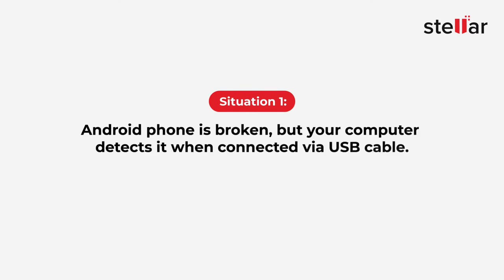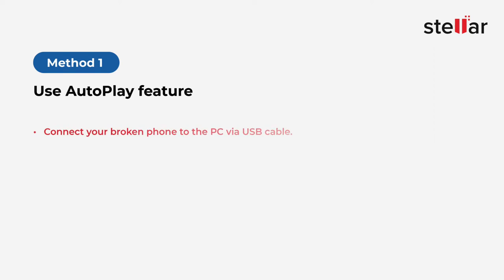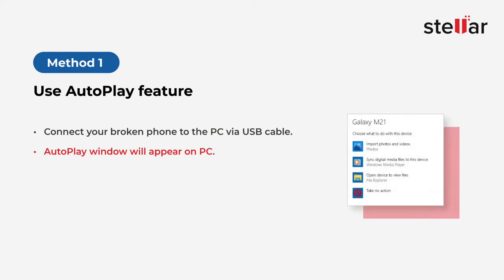Situation 1: Your Android phone is broken, but your computer detects it when connected via USB cable. Method 1: Use the Autoplay feature. Connect your broken phone to the PC via USB cable. Then, the Autoplay window will appear on your PC.